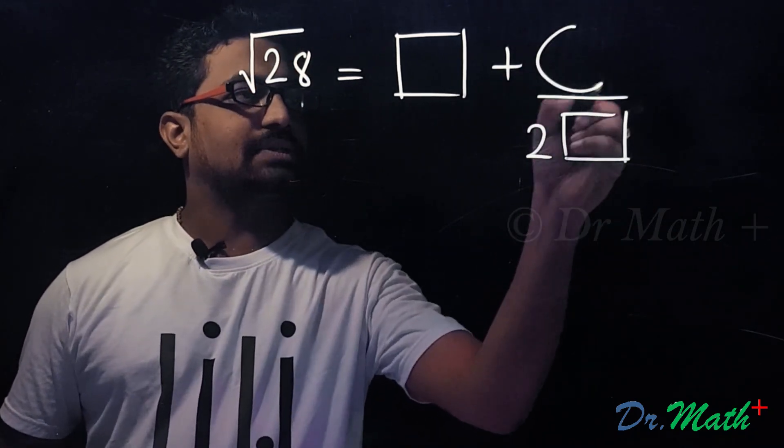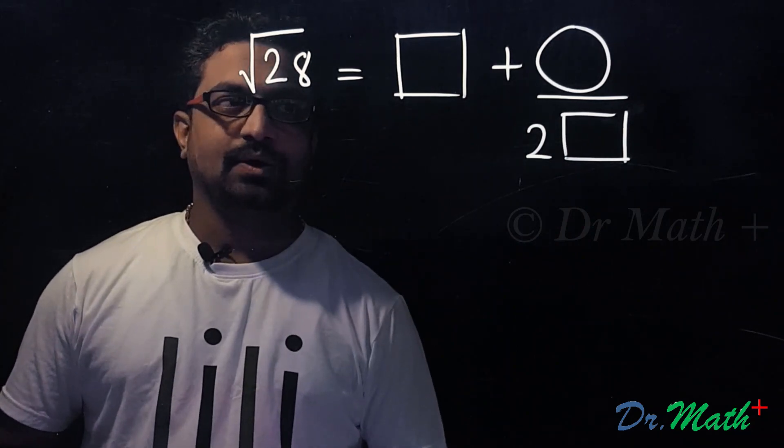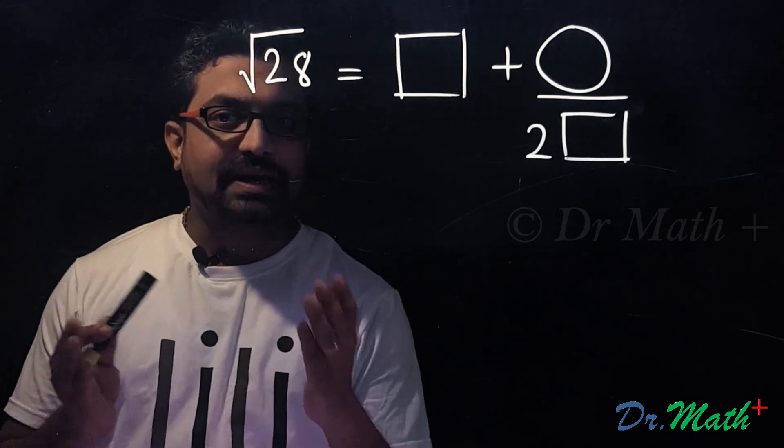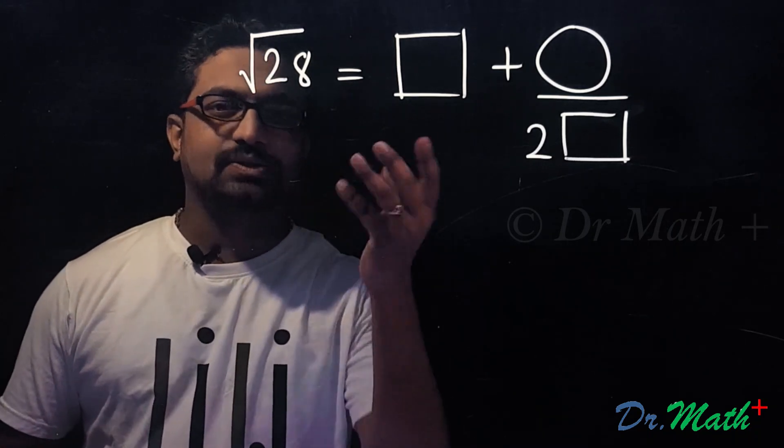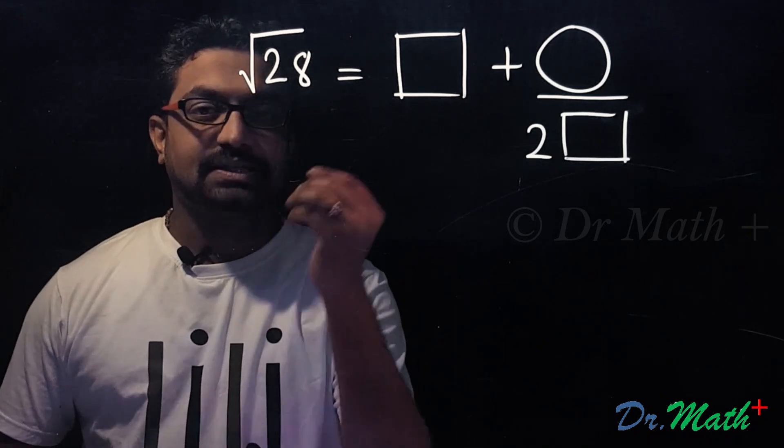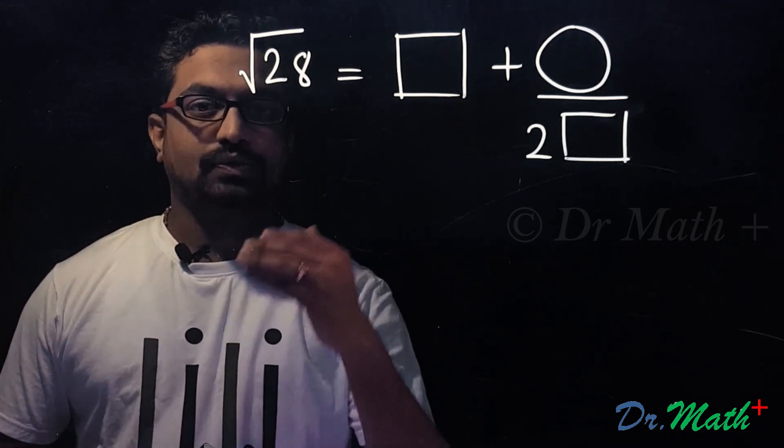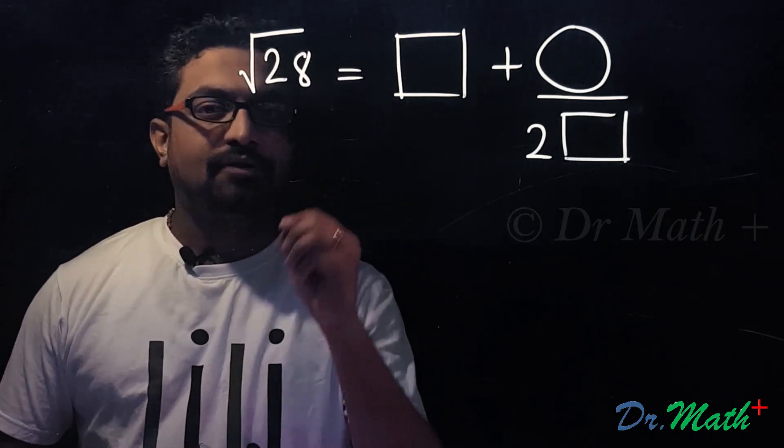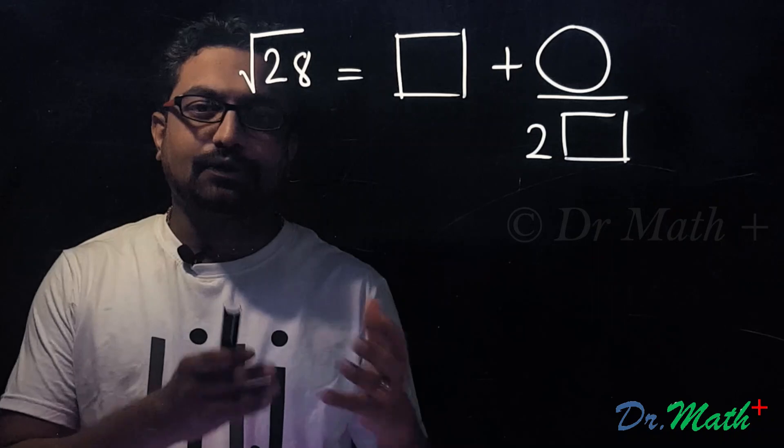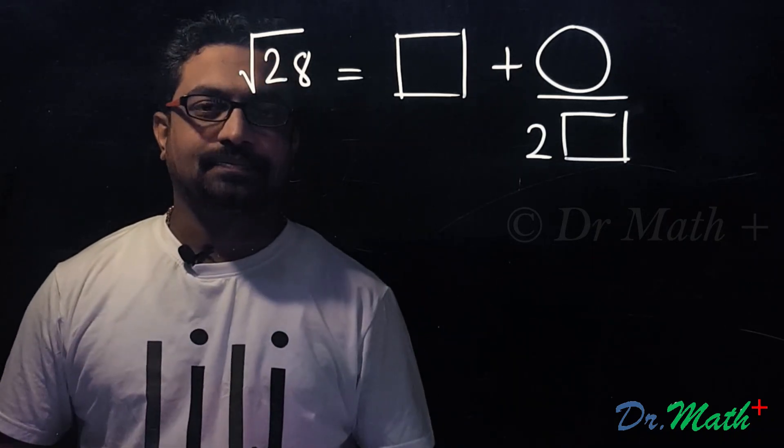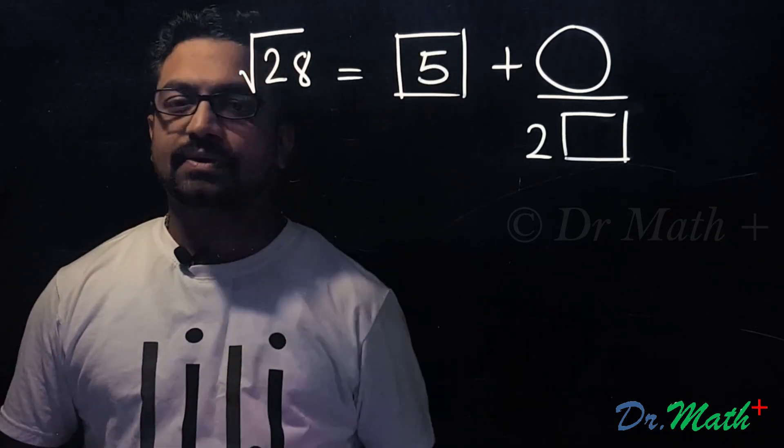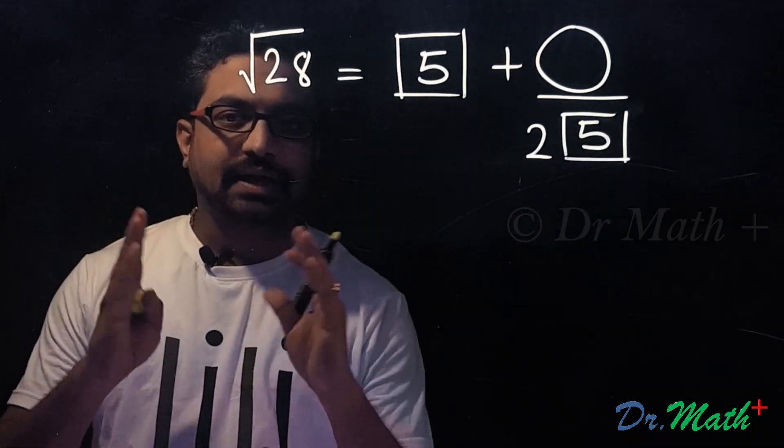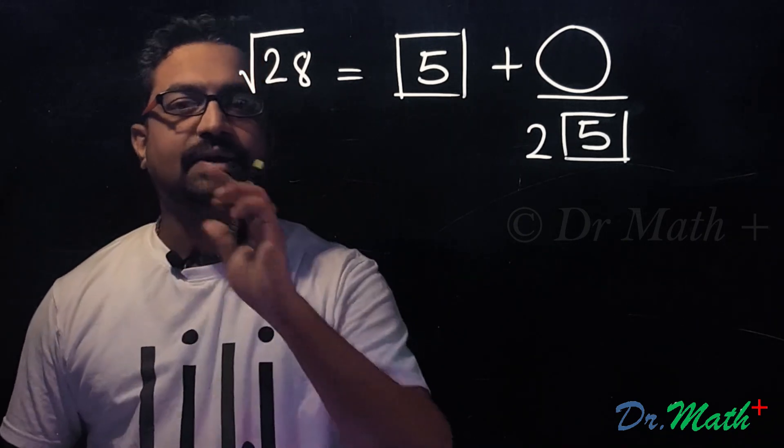Now, square root of 28 is a little more than square root of 25. 25 is a perfect square, so square root of 25 is 5. Therefore, square root of 28 must be 5 point something, and we just need to find out what is that something. So let me write that 5 here and write 5 here also. Now think, 28 is how much more than 25? 28 is 3 more than 25, so let me write that excess part, 3, and your answer is ready.